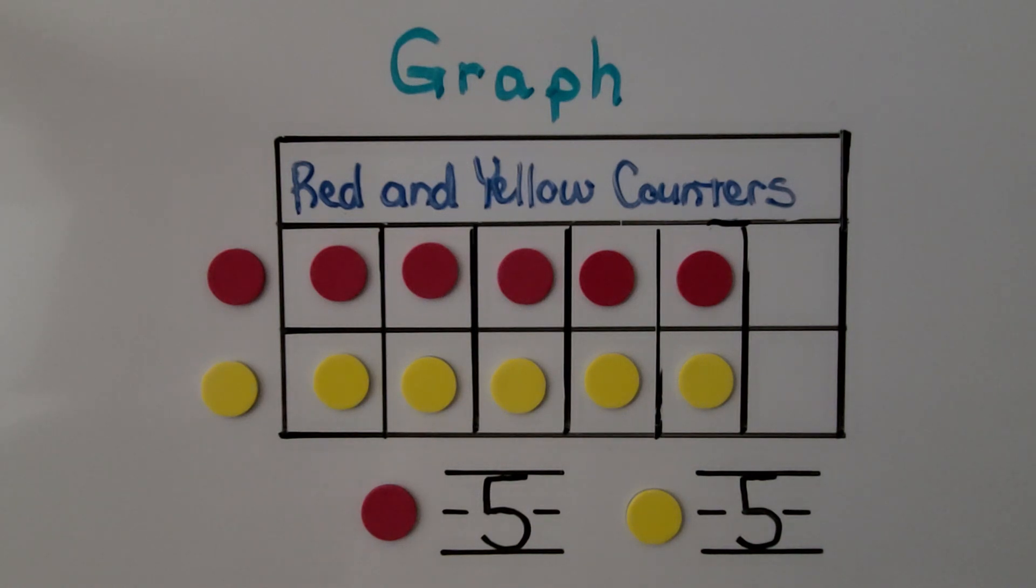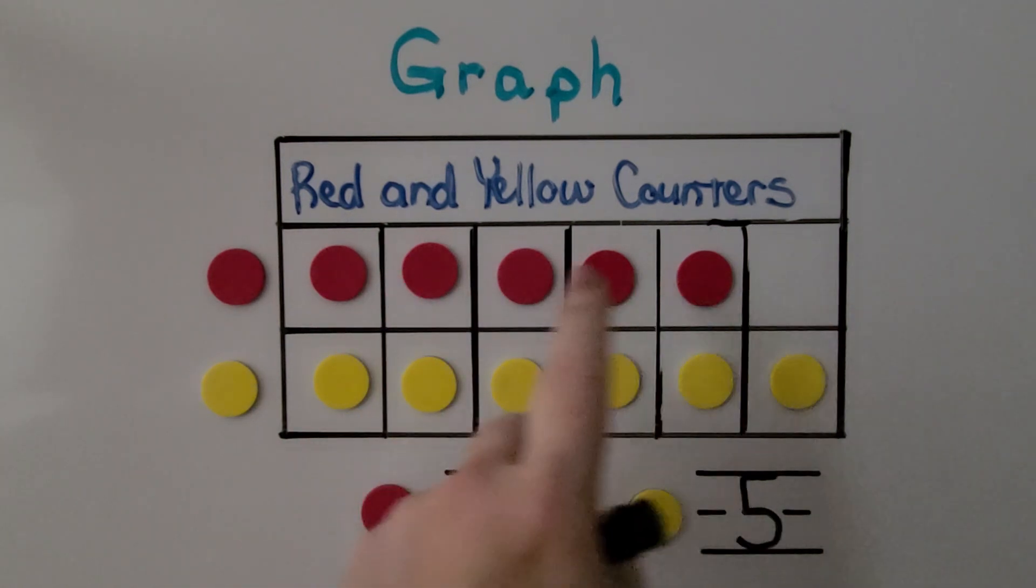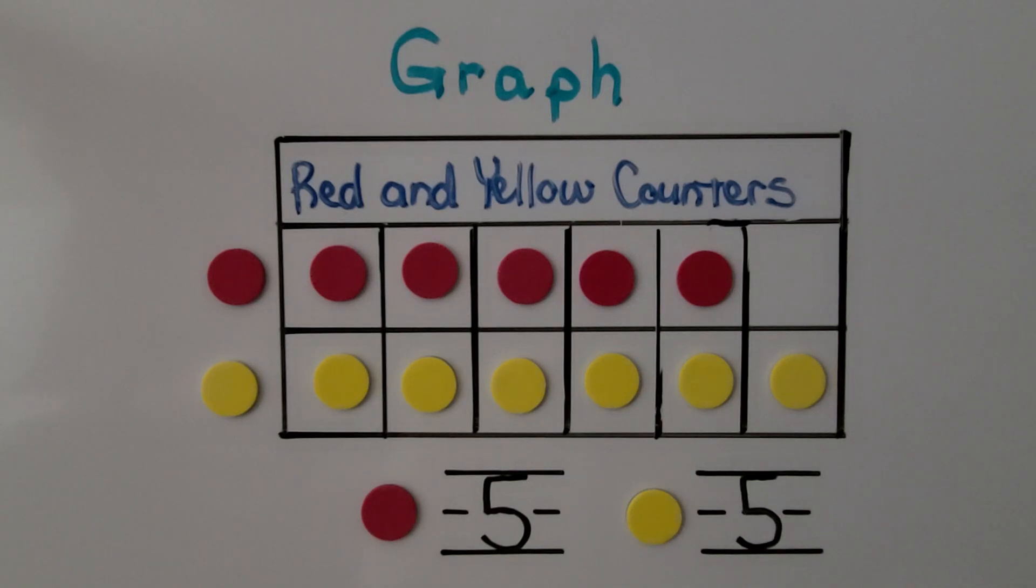But what if we added one more yellow counter? Would our answer change? Would they have the same number? No, there would be more yellow. There would be more yellow in this row than there are red in this row. The yellow row sticks out farther. There are fewer red counters. We need to circle the category that has more on the graph. That would be yellow. And now there aren't five anymore. There are six yellow.